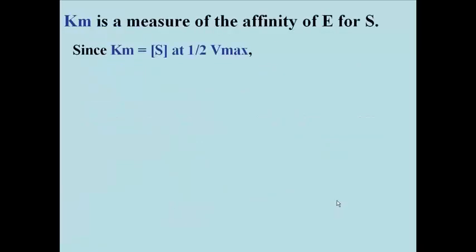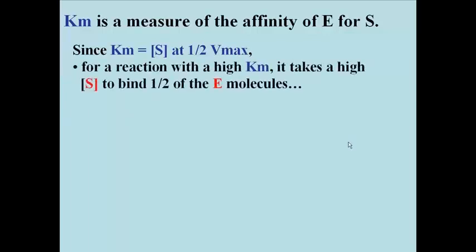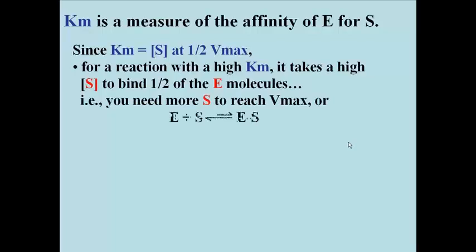What about Km? Km is the measure of the attraction of E for S, the affinity of enzyme for substrate. Km is equal to the substrate concentration at one-half Vmax. So for a reaction with a high Km, it will take a high concentration of substrate to bind half of the enzyme molecules. You need more substrate to achieve half Vmax and therefore also Vmax, the maximum catalytic rate. You can rewrite the equation as E plus S goes to ES, but the reactants seem to be favored. It is less likely to form an ES complex if the Km for the reaction is very high.